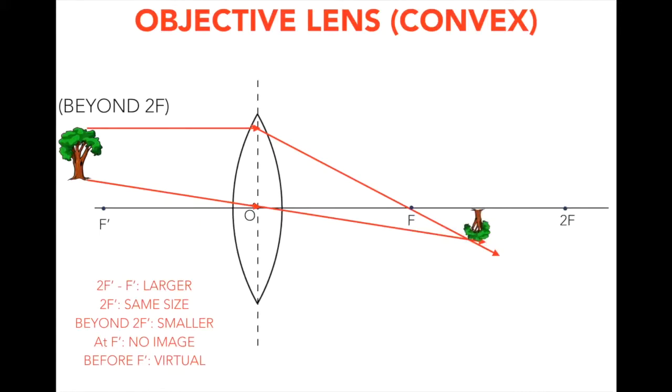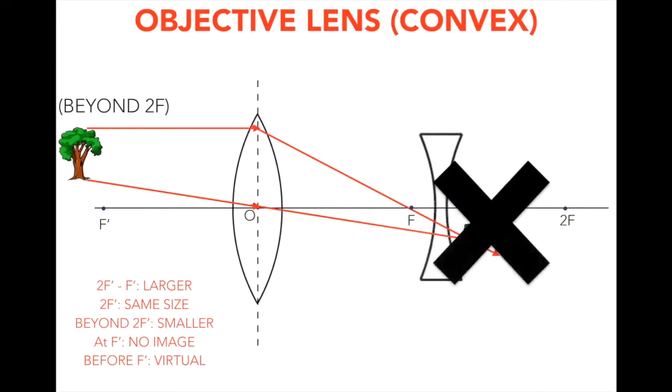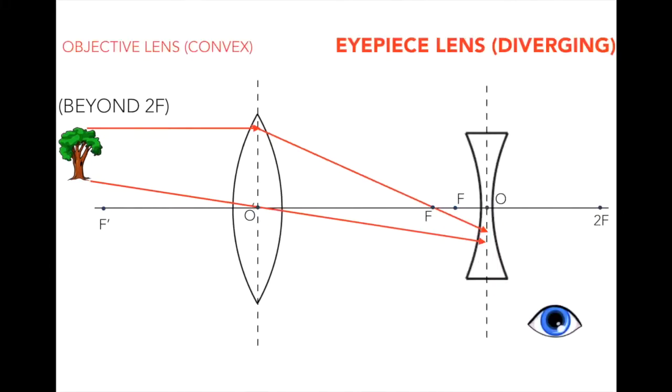Now what would happen if you placed a diverging lens right before where the real image forms? Well, there no longer would be that real image. Instead, the light rays would continue to travel as they did in the previous diagram. However, when they reached the concave eyepiece, they would diverge through the concave eyepiece and reach the viewer's eye.